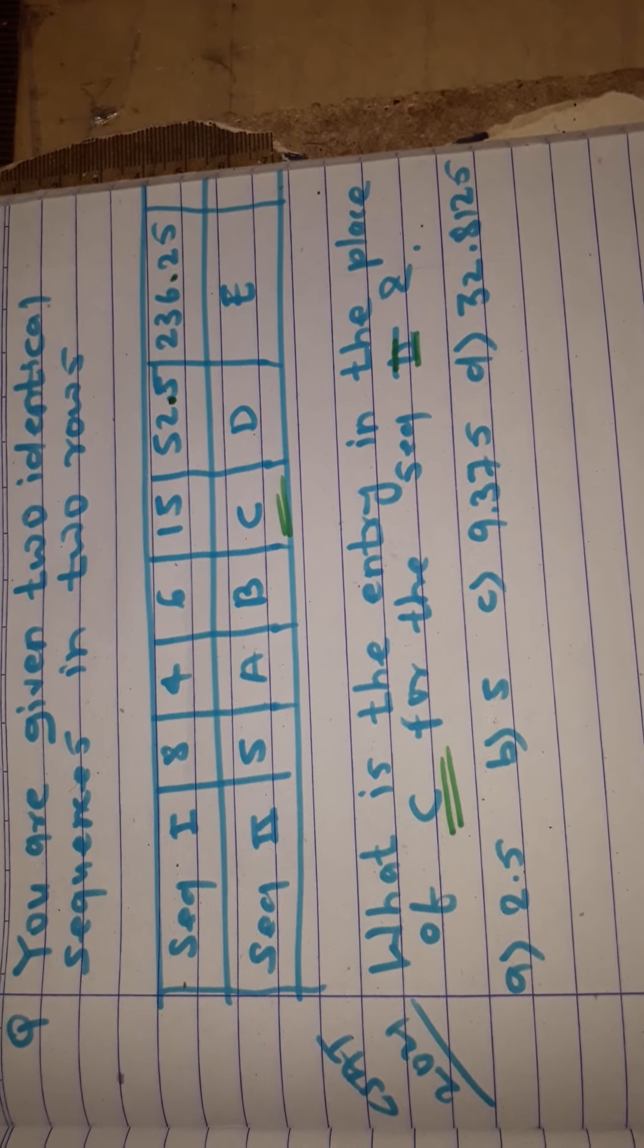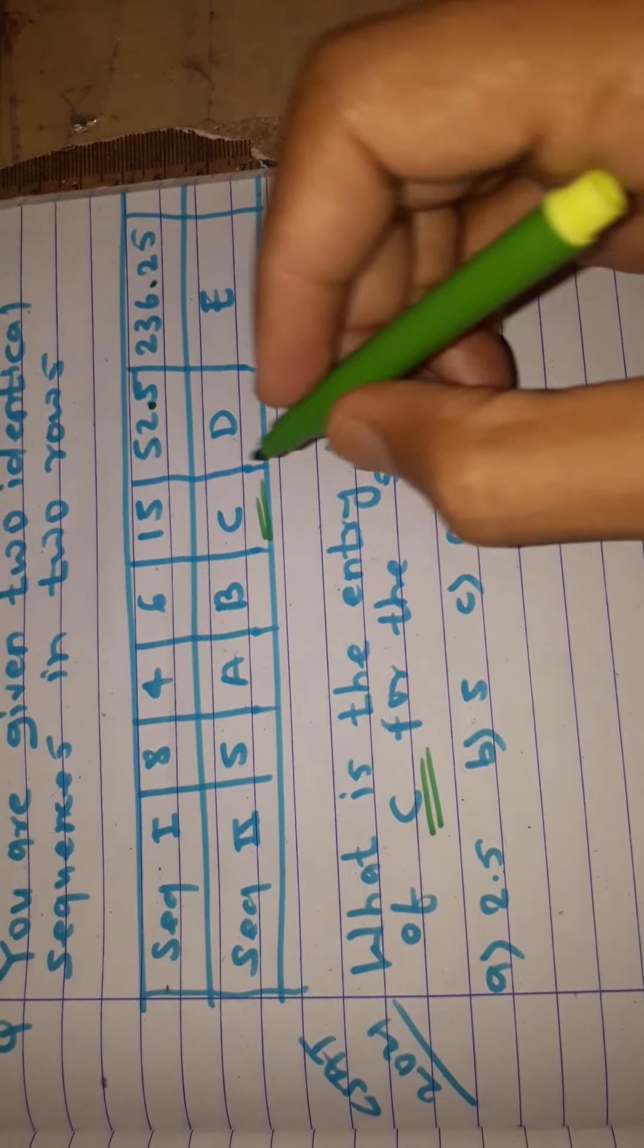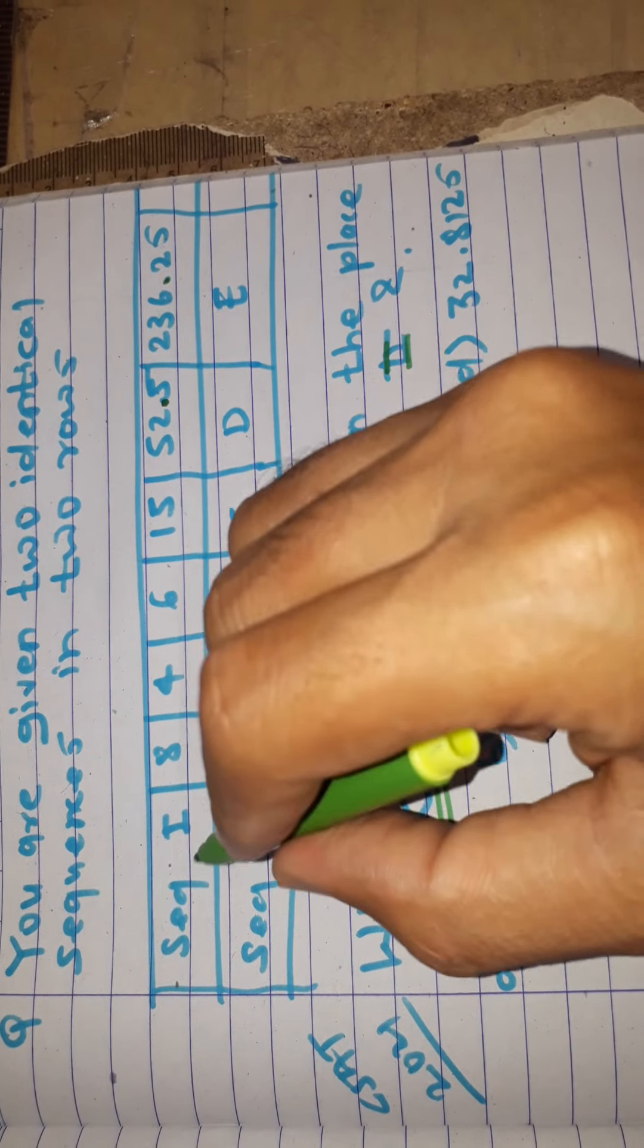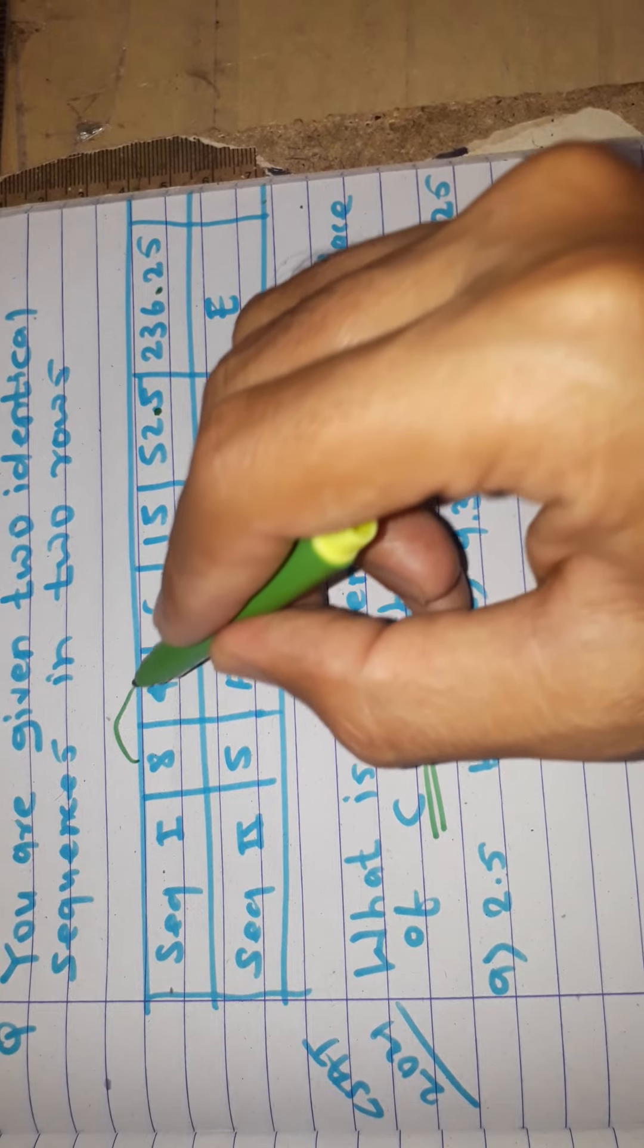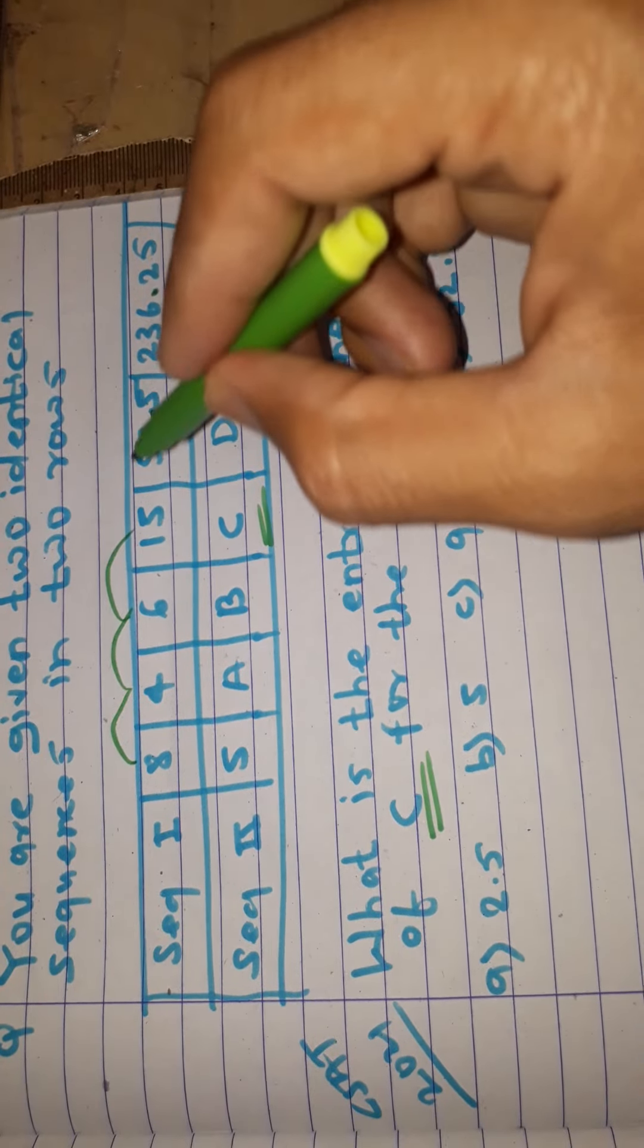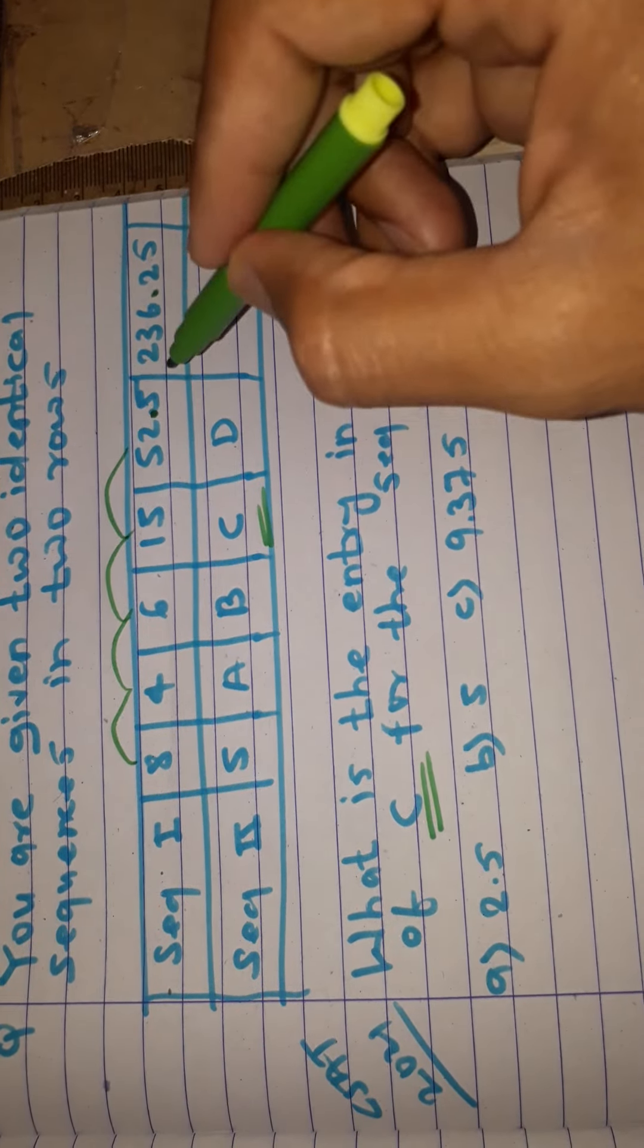We have to find the value of c. First of all, we see the first row sequence. How does it go from 8 to 4, 4 to 6, 6 to 15, 15 to 52.5, then 236.25?